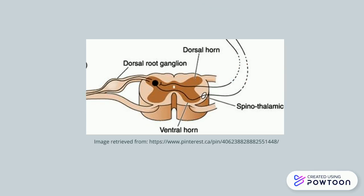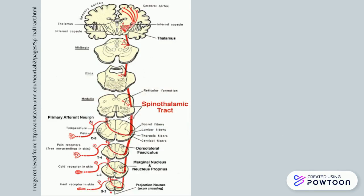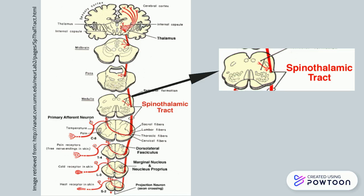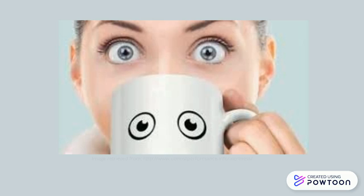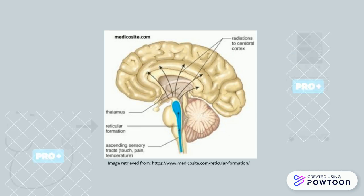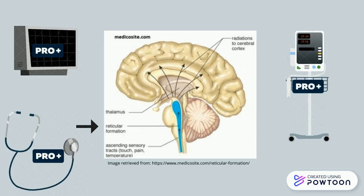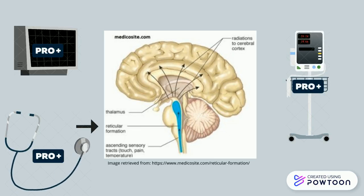Step 4. Messages from the dorsal horn of the spine are relayed up the spinal cord through the spinothalamic tract. The reticular formation is one of the first brain structures that receives the message from the nociceptors. The activation of the reticular formation contributes to the reactions of wakefulness and alertness associated with pain. The neurons of this structure can also alter your heart rate, arterial blood pressure, respiration, and other vital functions.